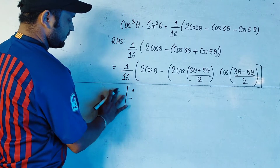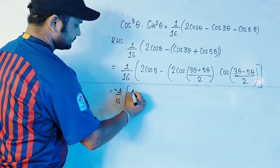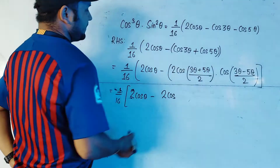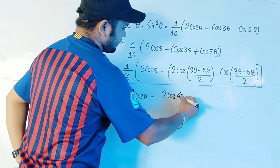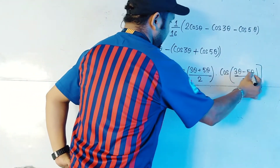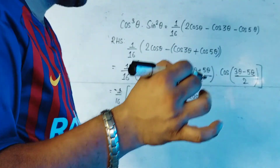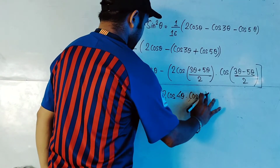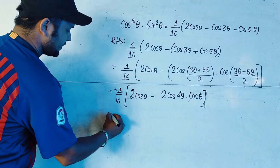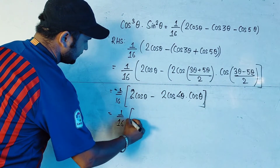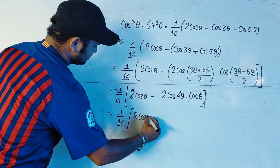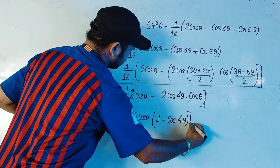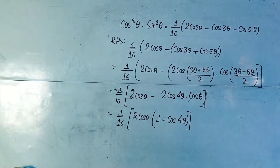After applying the formula, we have 1/16 times (2cosθ - 2cos4θ·cosθ). Here, (3θ + 5θ)/2 = 4θ and (3θ - 5θ)/2 = -θ, and cos(-θ) = cosθ. We then take 2cosθ common, leaving 1/16 times 2cosθ times (1 - cos4θ) inside the bracket.